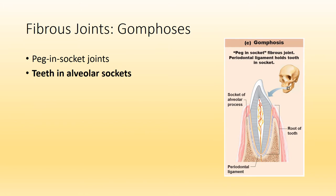The last type of fibrous joint is known as a gomphosis. The one example of a gomphosis will be the teeth in their sockets. Remember the alveolar processes of the maxilla and the mandible. As the teeth sit in there, they are anchored by the periodontal ligament. These peg-in-socket joints, or the teeth, are examples of a gomphosis.